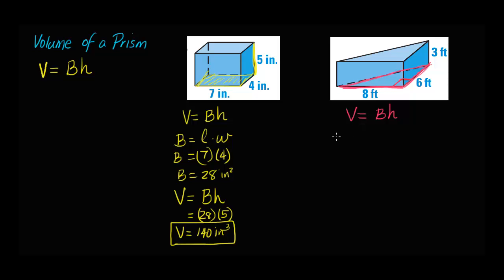So let's look for the area of the base. Since this is a triangle, we need to find the area of the base by saying base times height divided by 2. That's the formula for the area of the base because it's a triangle. So the area of the base is going to equal 8 times 6 divided by 2. The area of the triangle is 24 square feet, because this is area — that's the amount of space this triangle occupies.